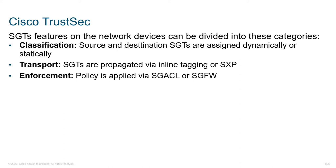Effectively, what these group tags are going to be used for are three things. First, classification — we can look at source and destination resources and assign a group to each of them. For instance, finance servers have a security group of 10, and employees have a security group of 4. We've got those mappings laid out.